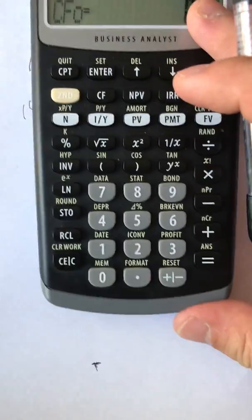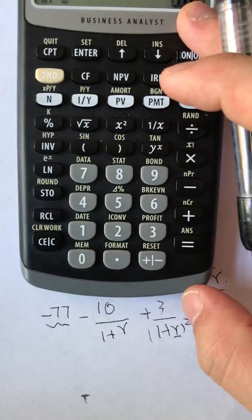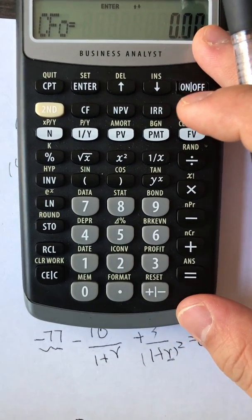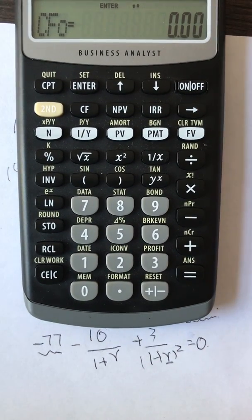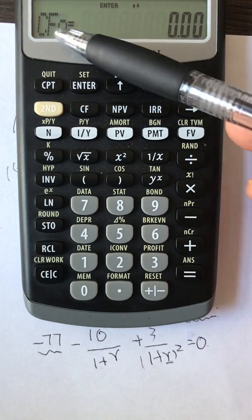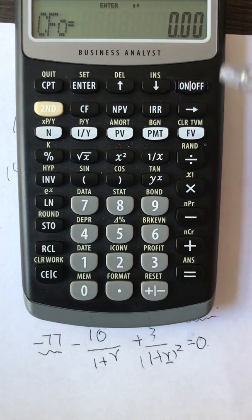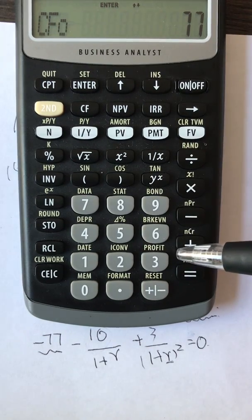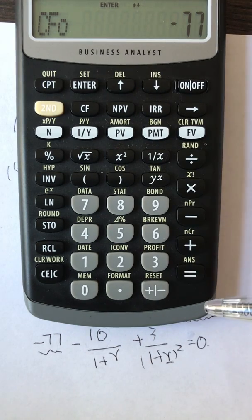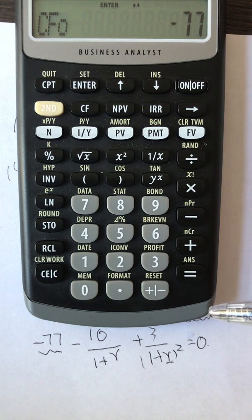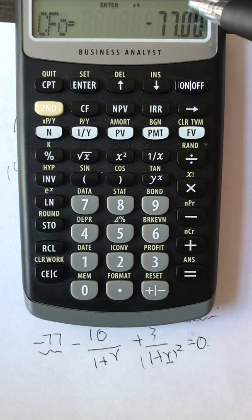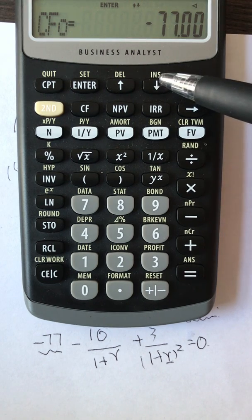Let me move it a little bit. Now, first let's enter our first payment which is cash flow zero, it's 77. Just to be consistent we will follow the same sign as our equation here. Let me change the sign to be negative 77, I push enter, and now you see this is stored in the memory.